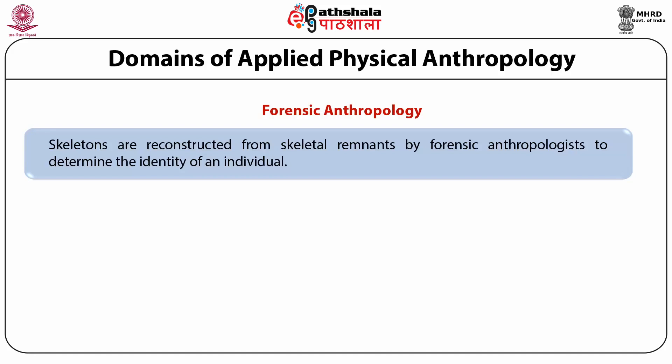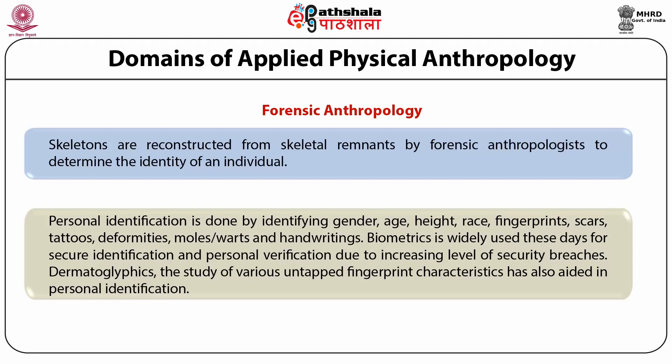This can aid the police in tracing out reported and unreported missing persons. Personal identification is done by identifying gender, age, height, race, injuries, fingerprints, scars, tattoos, deformities, moles, and handwriting. Biometrics is widely used these days for secure identification and personal verification due to increasing levels of security breaches. It is a very important facet for both national and international security. Many organizations also use biometrics for enhanced user convenience, security, and record maintenance. Dermatoglyphics — the study of fingerprint classification — has also aided in personal identification.